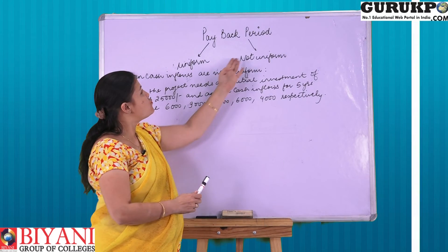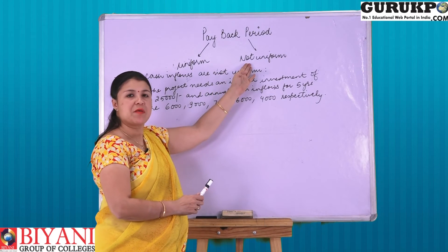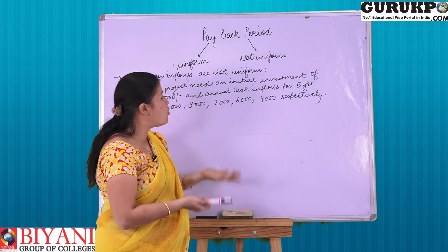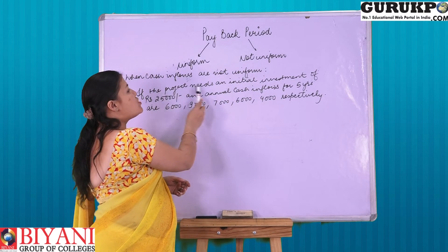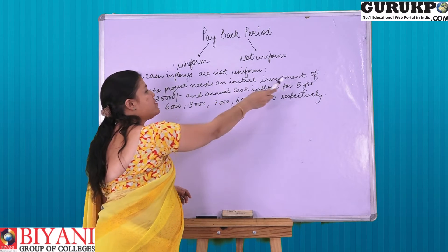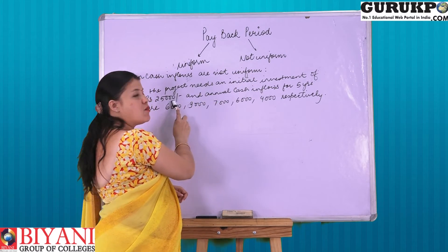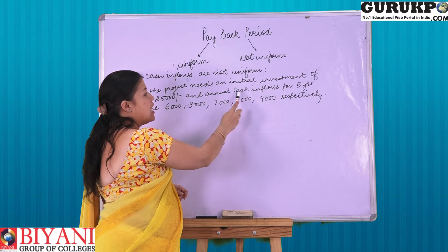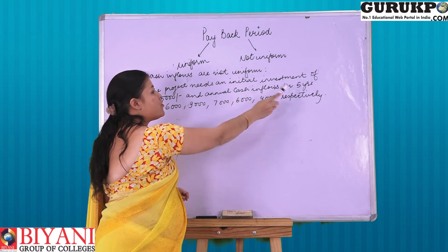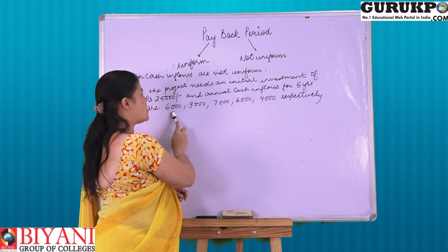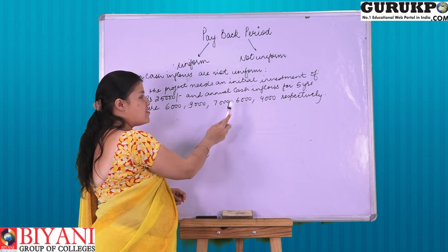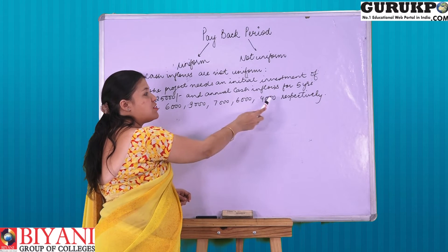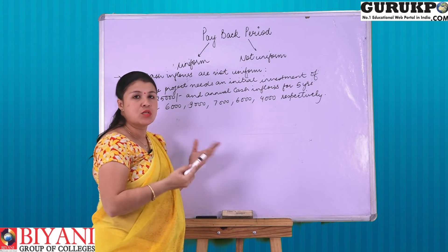Moving on to the next type of payback period in which the cash inflows are not uniform. If the project needs an initial investment of 25,000 and annual cash inflows for 5 years are: 6,000, 9,000, 7,000, 6,000, and 4,000 — how are we going to calculate the payback period?